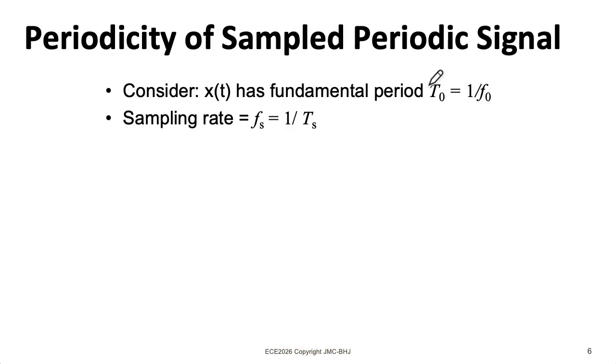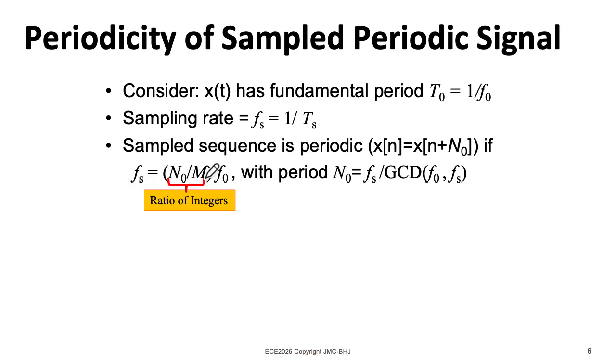Suppose you have a sinusoid with a period of capital T₀, equivalently a frequency of f₀, and you sample it at a rate fs. The resulting sampled sequence is going to be periodic if the sample rate is the frequency of the signal times a rational number. And the period of that sampled sequence is the sample rate divided by the greatest common divisor of the frequency of the signal and the sample rate.